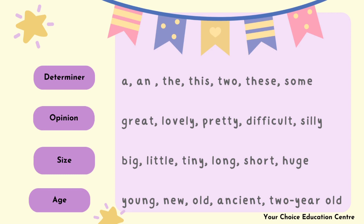For opinion adjectives, examples include: great, lovely, pretty, difficult, silly. For size adjectives: big, little, tiny, long, short, huge. For age adjectives: young, new, old, ancient, two-year-old.